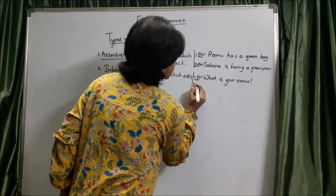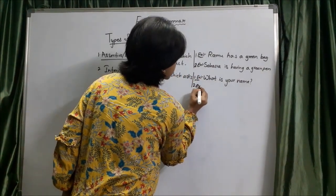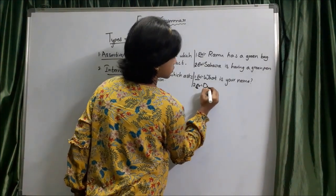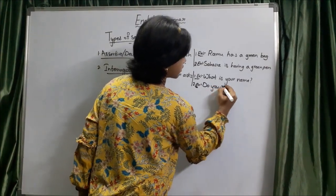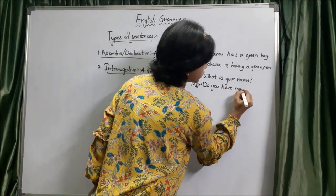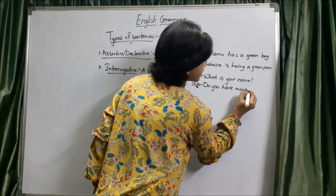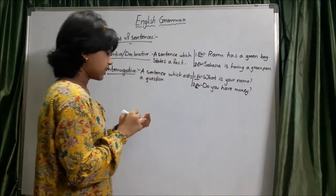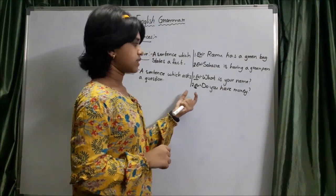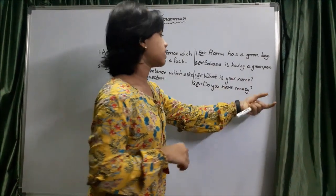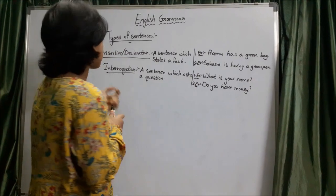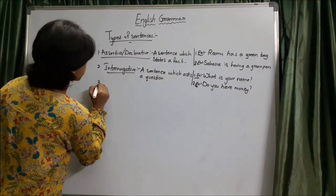The second example is: Do you have money? This sentence is also asking — the person is questioning the other person. So this also comes under interrogative sentence. Let's come to the third type.